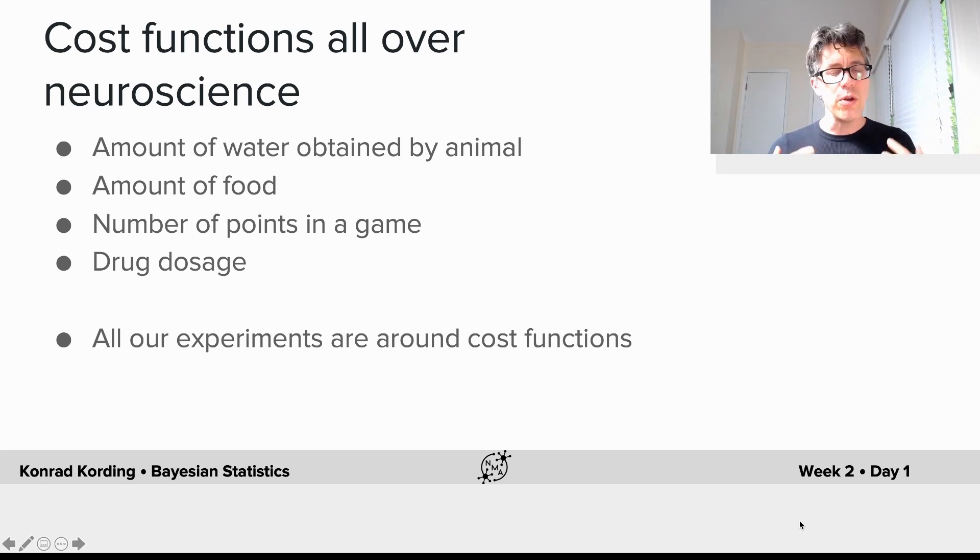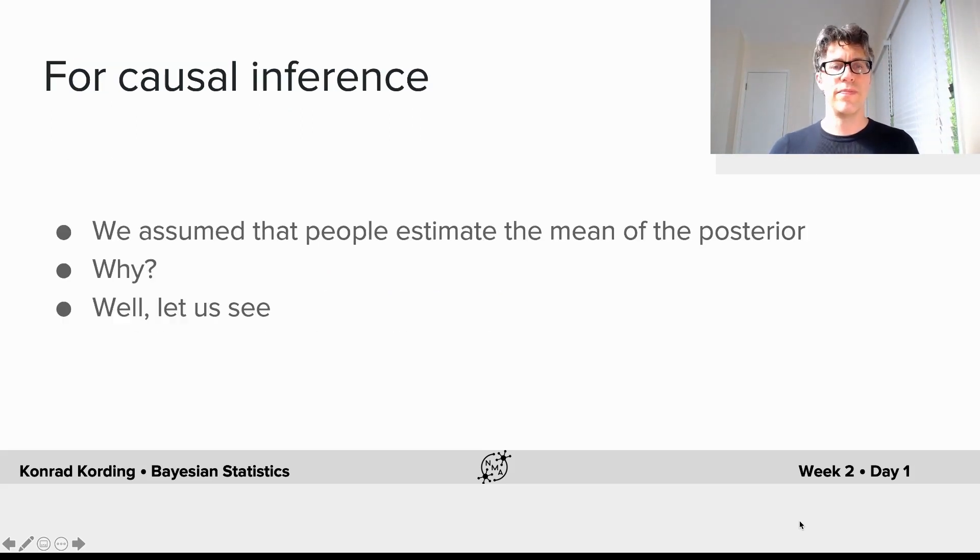All our experiments are explicitly or implicitly designed around cost functions. Arguably, evolution gives us cost functions as well. In the case of causal inference, we assume that people estimate the mean of the posterior. Why? Let us see.